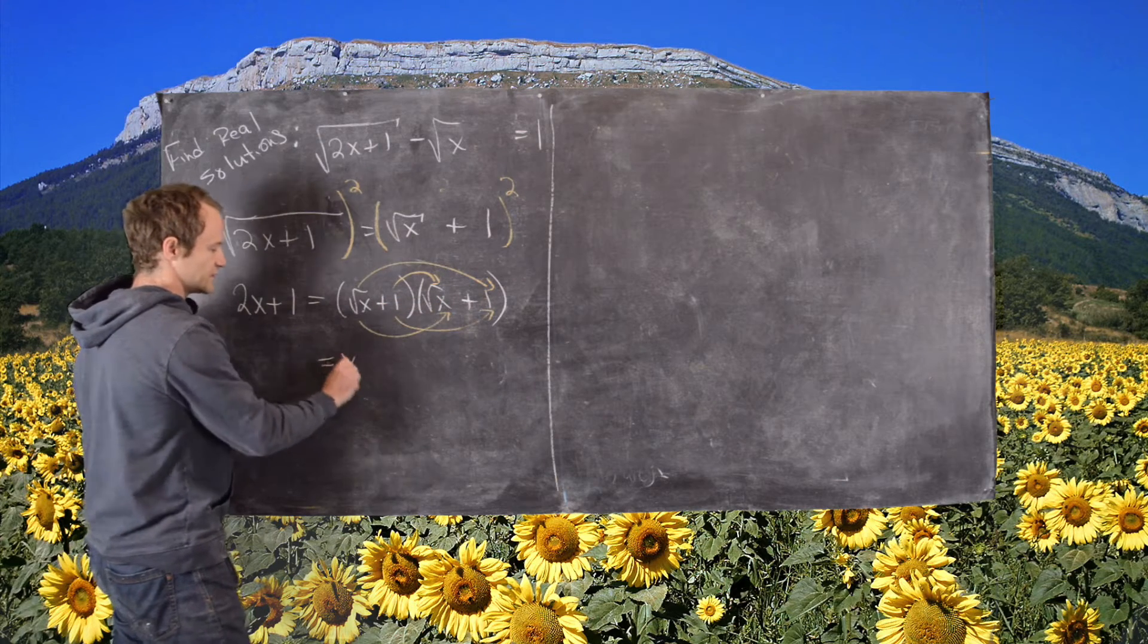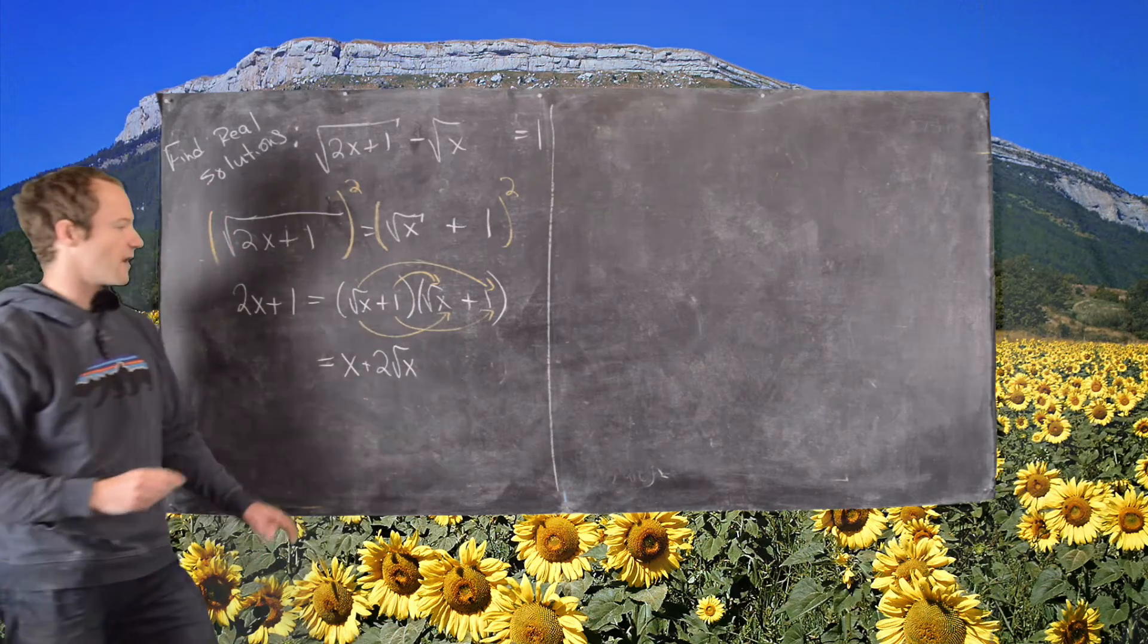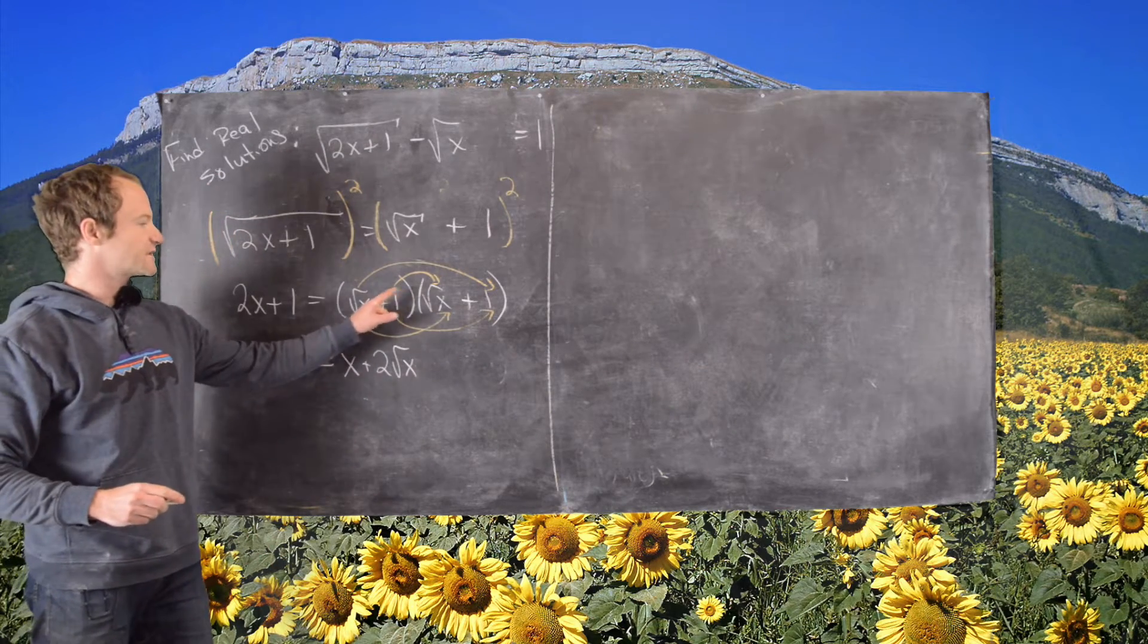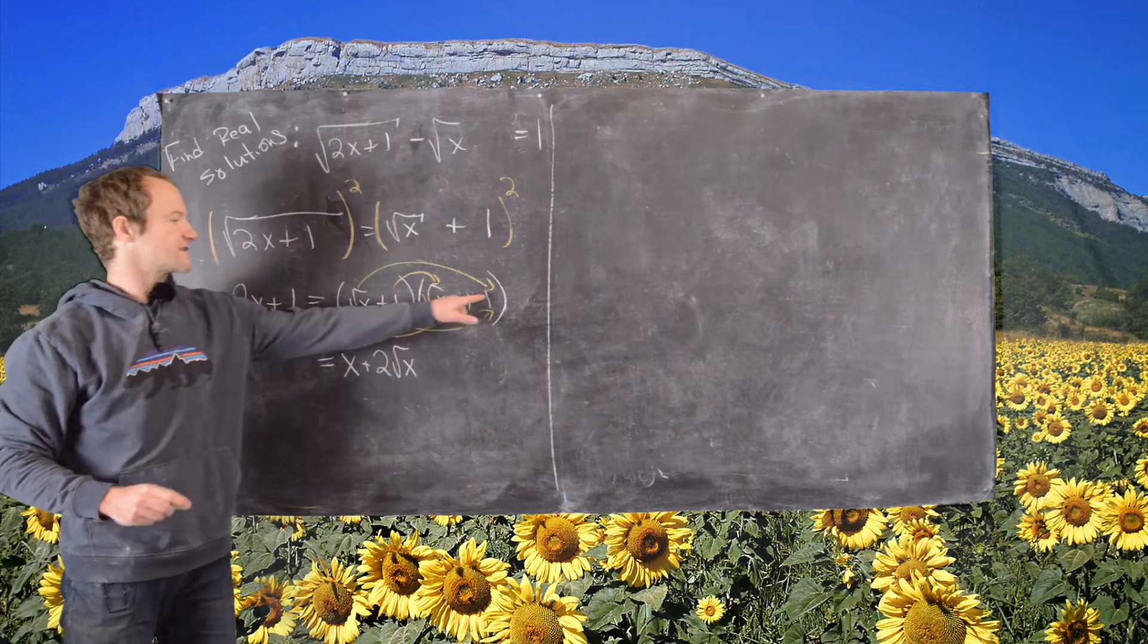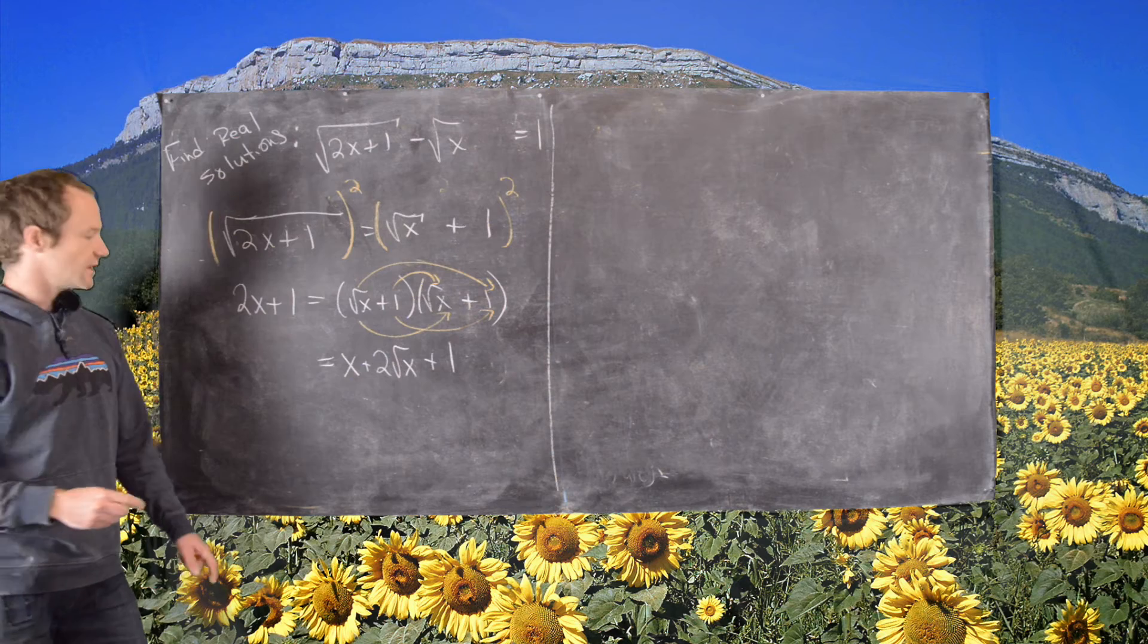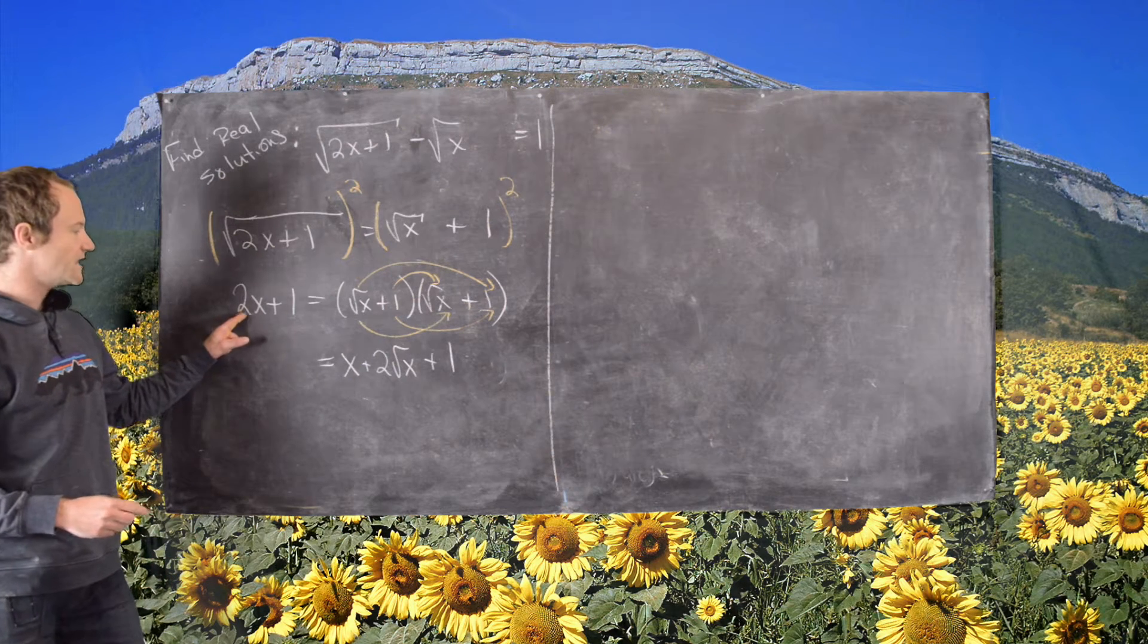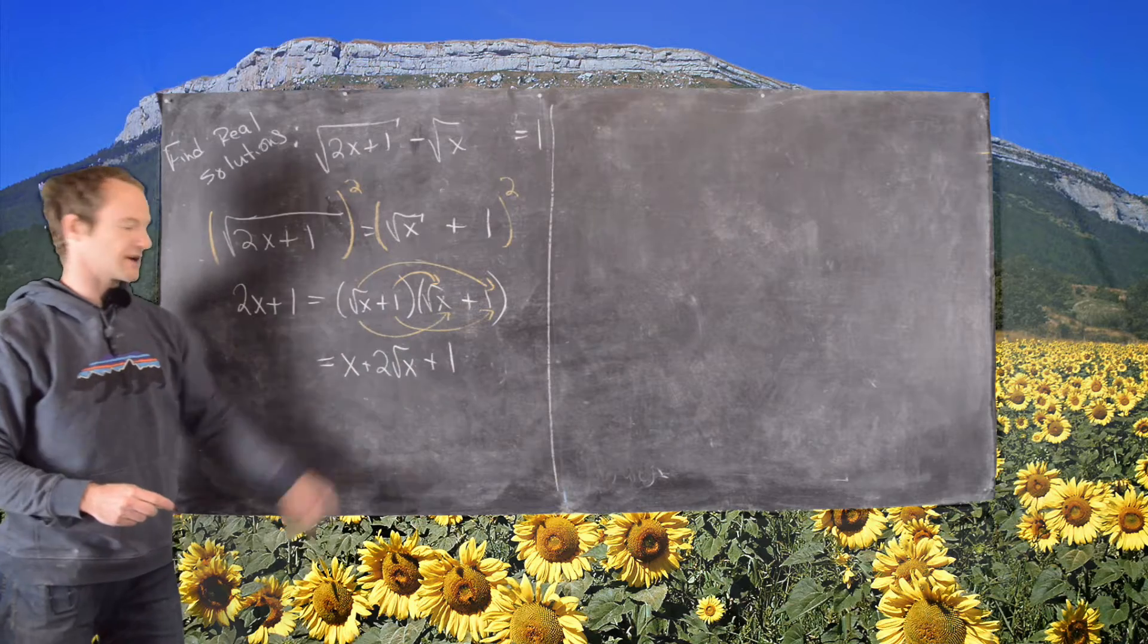Square root of x times the square root of x, which is x, plus two square roots of x. We get that from multiplying this 1 into this square root of x and also this square root of x into 1, and then finally we have plus 1. So we have this equation: 2x plus 1 equals x plus 2 square root of x plus 1.